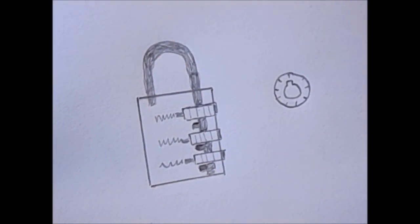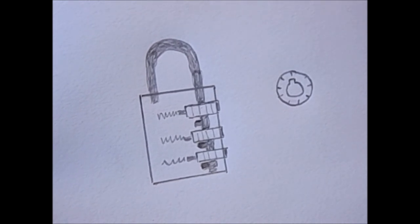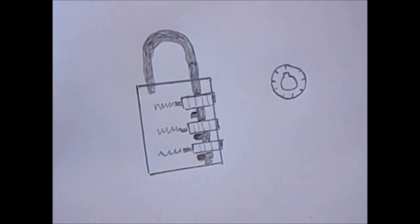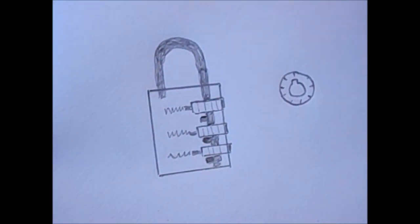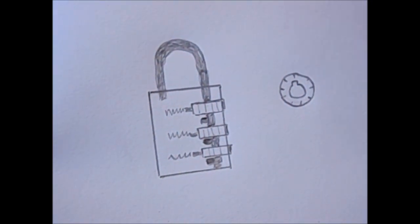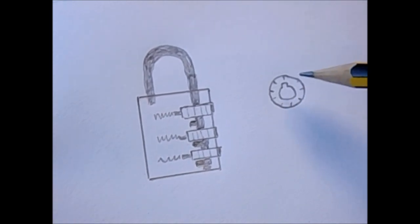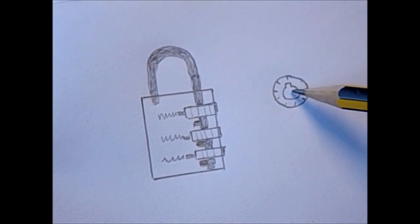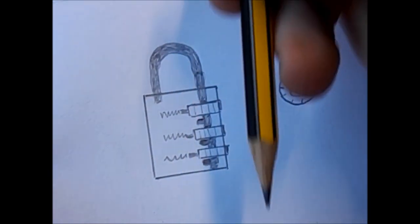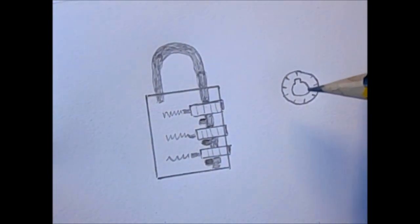So how does the combination lock actually lock? Well we have in our case three dials but it's the same kind of system no matter how many dials you have. And each dial is shaped like this. It has a hole down the center and the shackle actually sits in that hole.